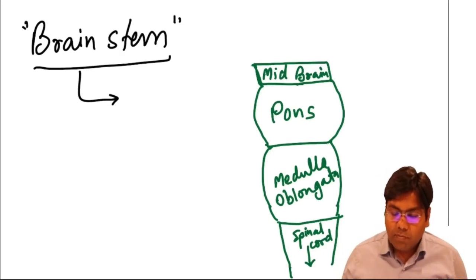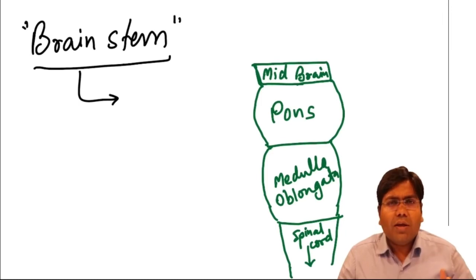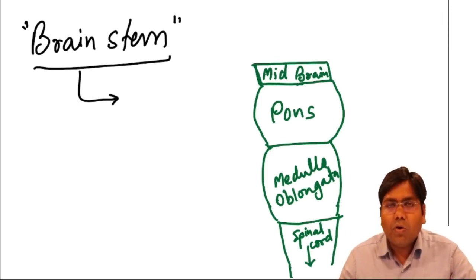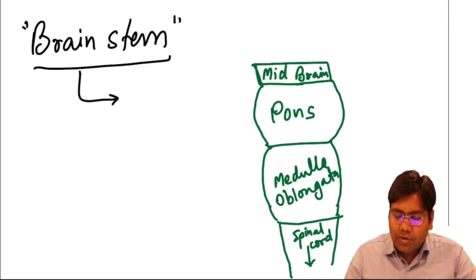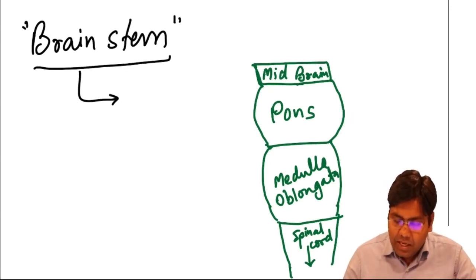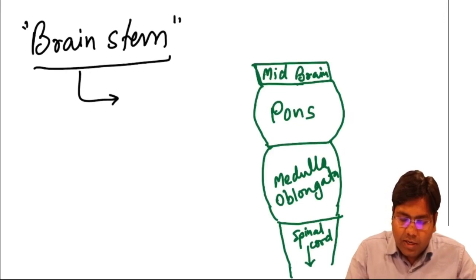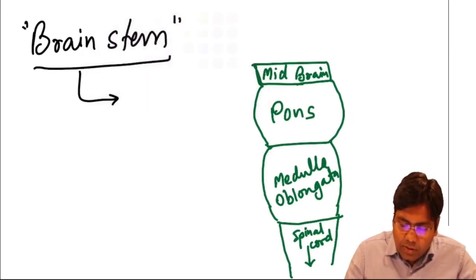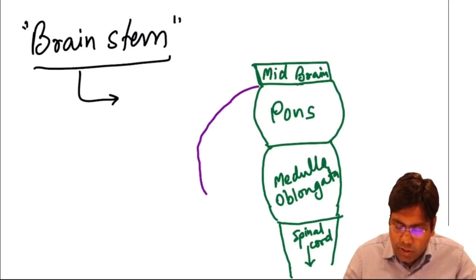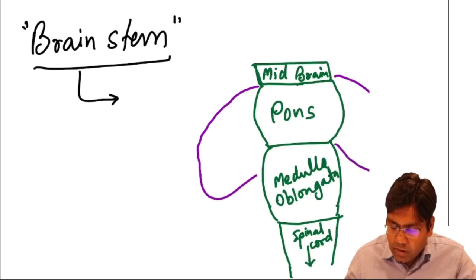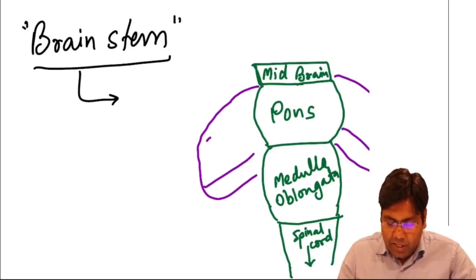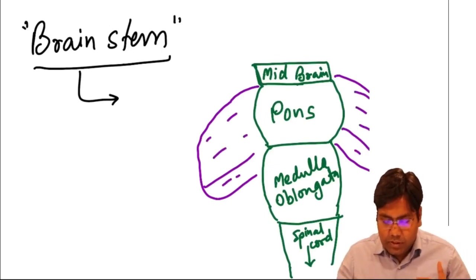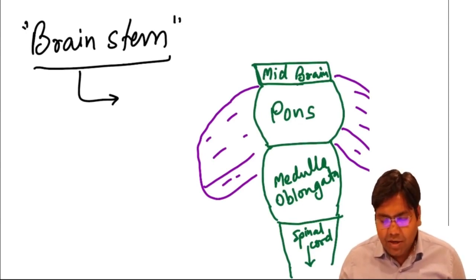My dear friends, when we talk about the brainstem, the topmost is the midbrain, below the midbrain is the pons, and below the pons is the medulla oblongata. Midbrain is mesencephalon; pons and medulla oblongata are part of the hindbrain. One more thing in the hindbrain — that is behind the brainstem — and that is known as the cerebellum. So this is an introduction of the brain.